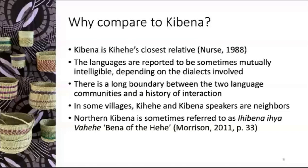I wanted to discuss briefly why I'm comparing to the two languages I'm comparing to. First, Kibena — Kibena is Kihehe's closest relative. The languages are reported to be sometimes mutually intelligible, though this partly depends on the dialects involved. There is a boundary between the two language communities, they are adjacent with a history of interaction, and in some villages you have both Kihehe and Kibena speakers.